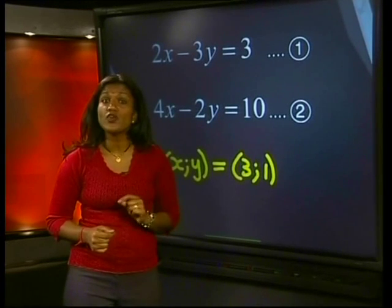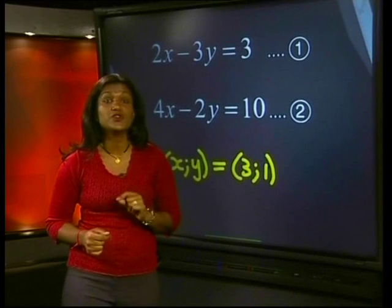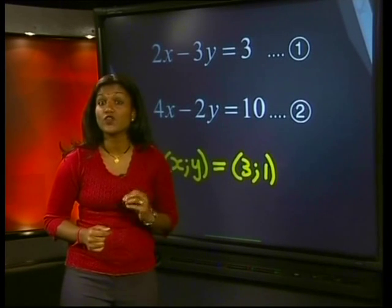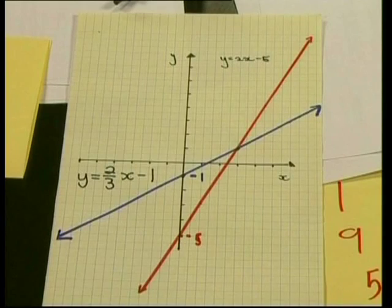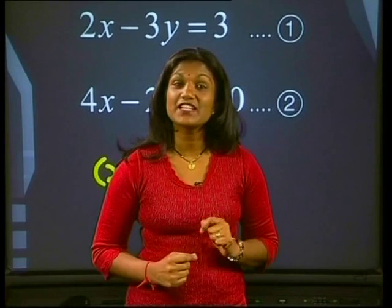Remember, your graphs have to be pretty accurate so that you can take a correct reading of the coordinates of points. We have seen in this example that if the lines intersect, there is one point of intersection and one solution. Now, let's look at another example.